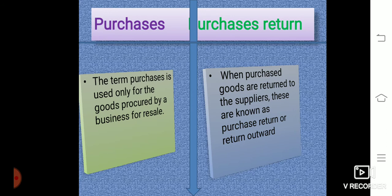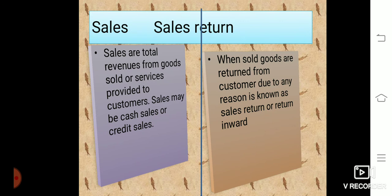Next is purchase. The term purchase is used only for goods processed by a business for resale. Purchase return, or return outward, refers to when purchased goods are returned to the supplier. Next is sales. Sales are the total revenue from goods sold or services provided to customers. Sales may be cash sales or credit sales. Sales return, or return inward, is when goods sold are returned by customers for any reason.